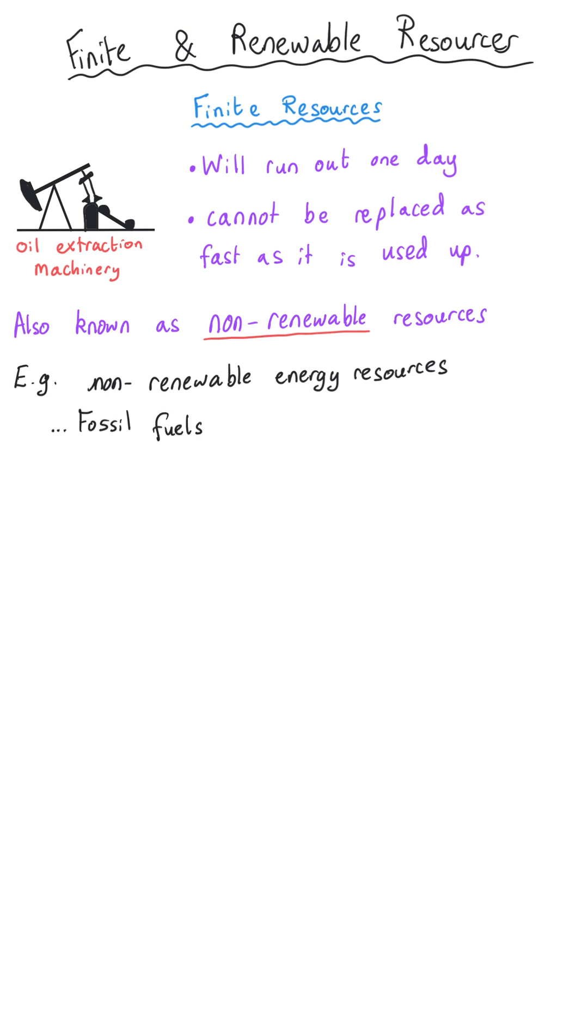Examples of finite resources then do include the fossil fuels, coal, oil, natural gas but they also include other things such as minerals and metals that are found in ores in the earth's crust. These are all non-renewable materials.